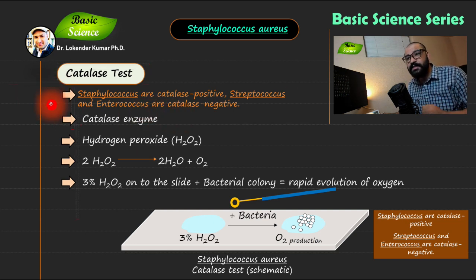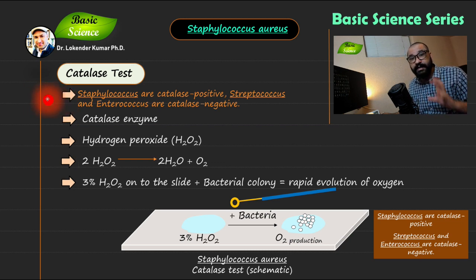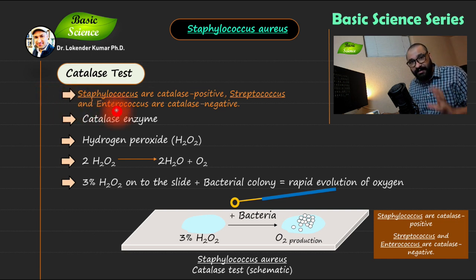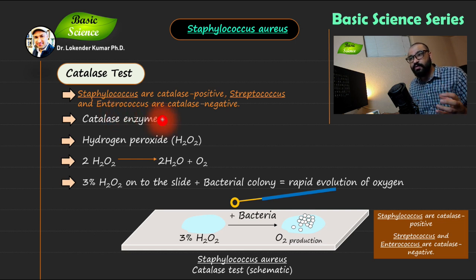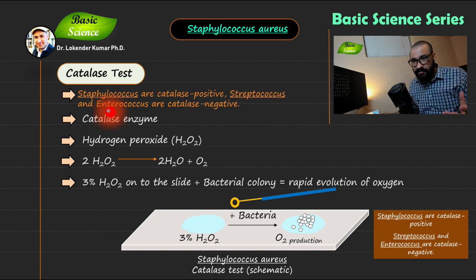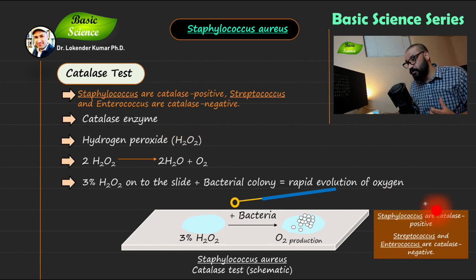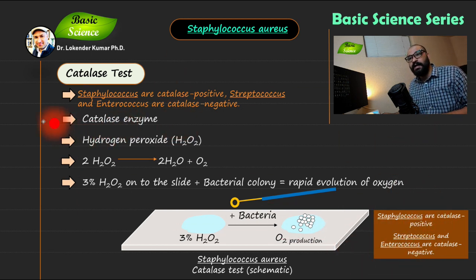In the first point, Staphylococcus are catalase positive, and Streptococcus as well as Enterococcus genera are catalase negative. You need to remember this particular point because it helps you differentiate between these specific genera. Staphylococcus are always catalase positive, and Streptococcus as well as Enterococcus are catalase negative.